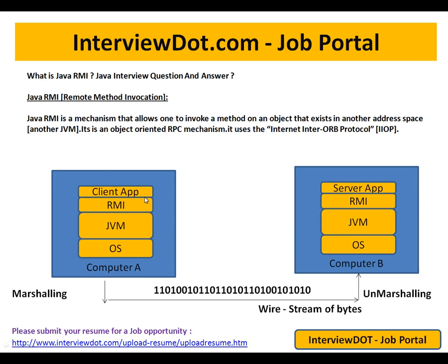The client application just calls the proxy method — that's all it knows; it does not even know what is happening under the wire. RMI takes care of everything. It's a very big topic and I'm trying to explain it in a short video. Hope this video is useful — thank you and all the best.